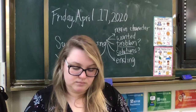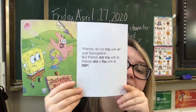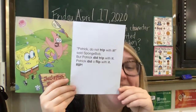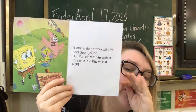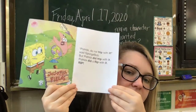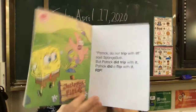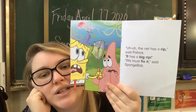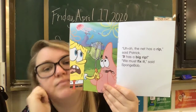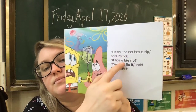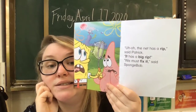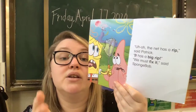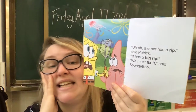'Patrick, do not trip with it,' said Spongebob. But Patrick did trip with it. Patrick did a flip with it. Rip. What do you think the problem's going to be? This says 'Jellyfish Fields' — it's where the jellyfish like to run. 'Oh, the net has a rip,' said Patrick. 'It has a big rip.' So what's the problem? The net has a rip. Can't catch jellyfish if your net is ripped — that's the problem. What he wanted, he could not have. 'We must fix it,' said Spongebob.